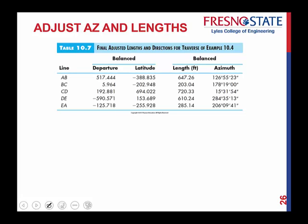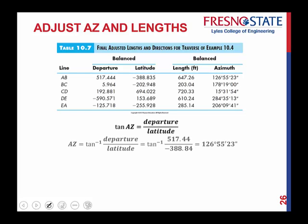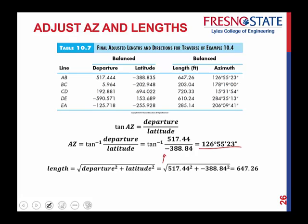Here are your adjusted azimuths and lengths from your balanced departures and balanced latitudes. If we know what our balanced departures and latitudes are, we can calculate the final lengths and final azimuths using those same formulas. For A to B, using the balanced departure and latitude - and watch where you put the signs, that is very important - you end up with a final adjusted azimuth of 126 degrees, 55 minutes, 23 seconds. It's no longer the preliminary azimuth from the angle balancing; this is your final azimuth. We also get a distance of 647.26 feet.